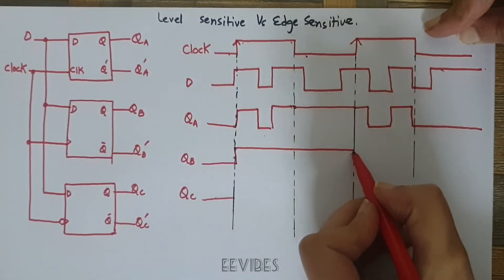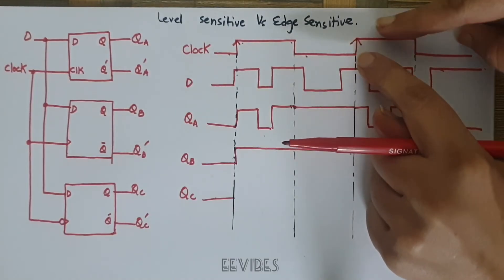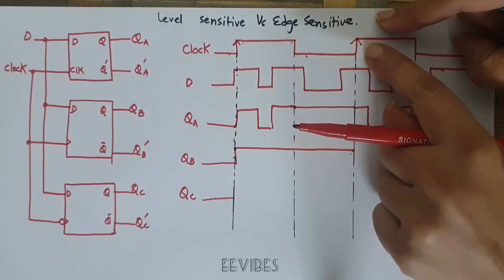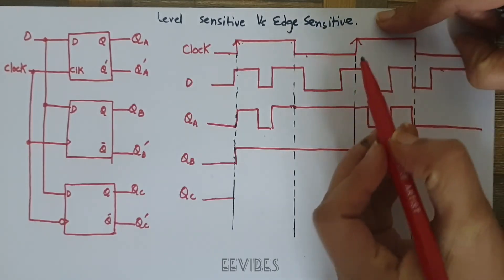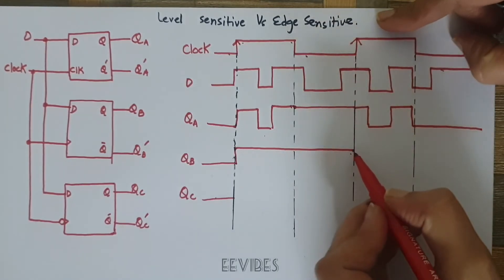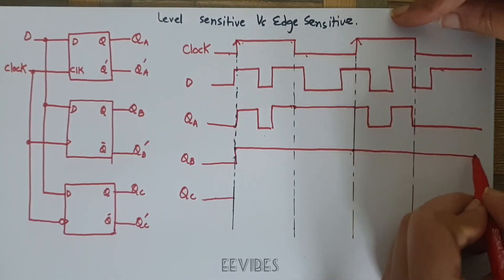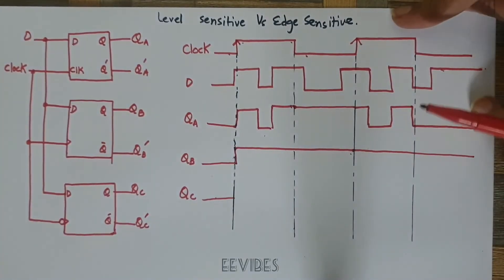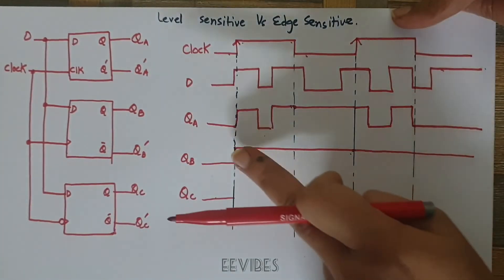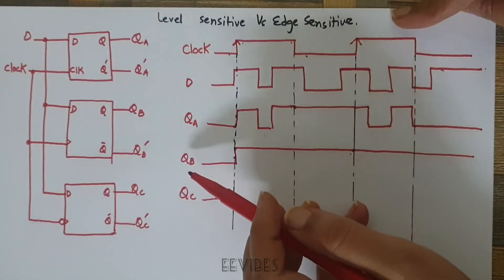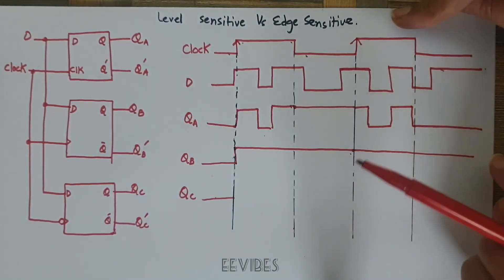When the next rising edge arrives, the value of D is again equal to 1 at that rising edge, so the output will continue at 1. We extend this waveform accordingly, since we don't have information for the next rising edge.